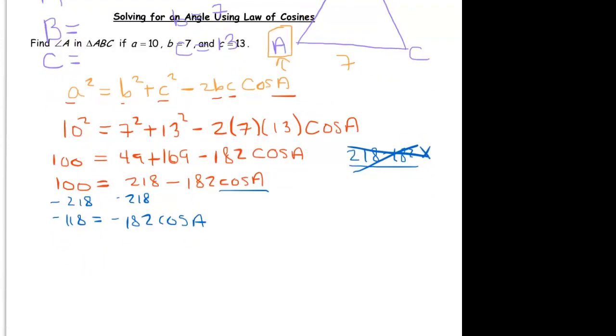So to finish this off, we divide by negative 182. And that means we get, in the calculator, 0.6484 equals cosine of A.